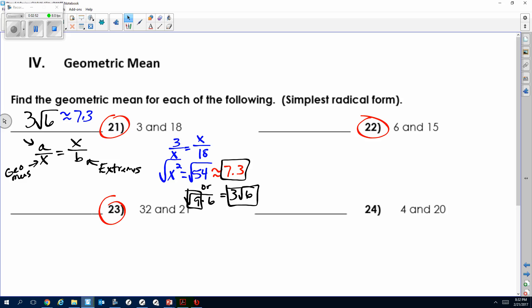All right, so let's look and see if our setup is correct for 22. Hopefully we have 6 over x equals x over 15. Now, some of you use the two number formula, which is fine. So you could say x equals the square root of 6 times 15, because you're multiplying the two numbers every time. So really we have x squared equals 90. x equals the square root of 90.